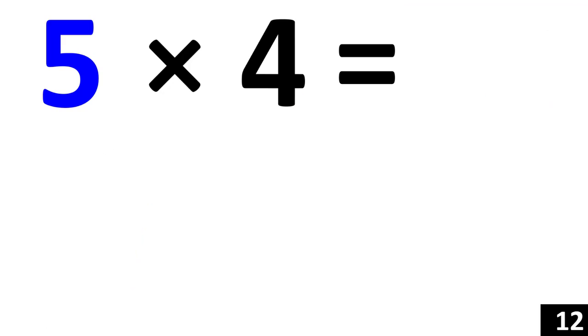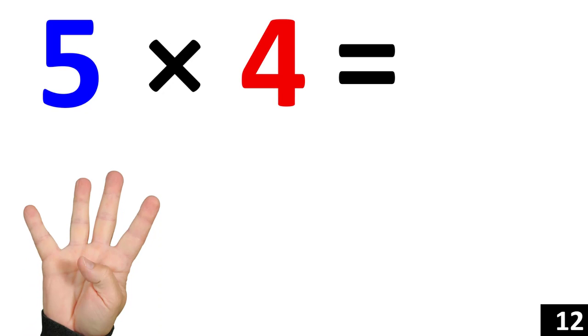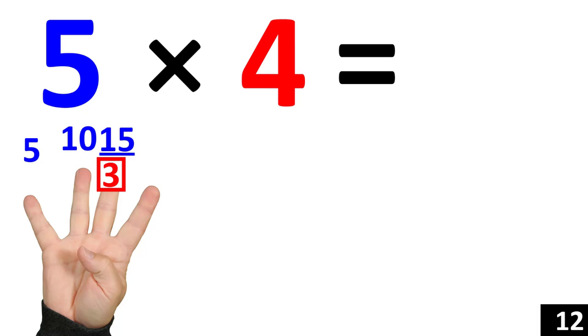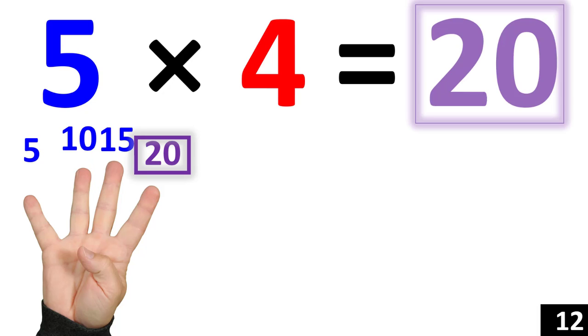5 times 4 is the same thing as counting by 5 four times. 5. 10. 15. 20. So we see that 5 times 4 is equal to 20.